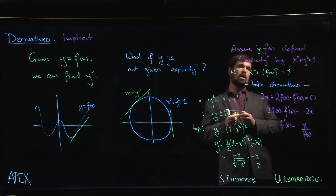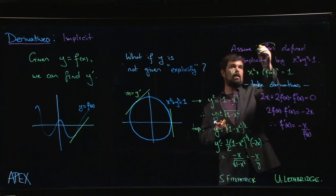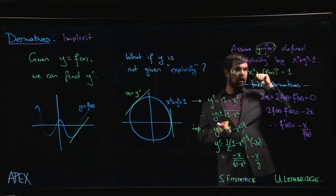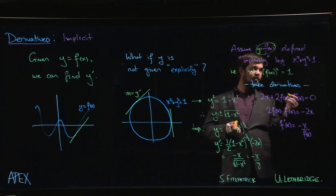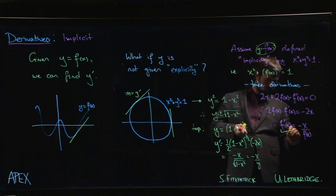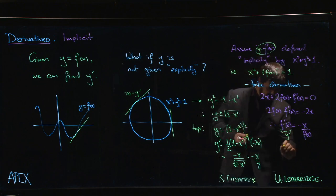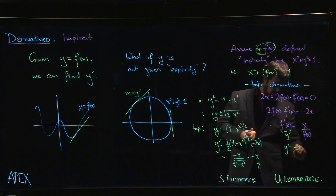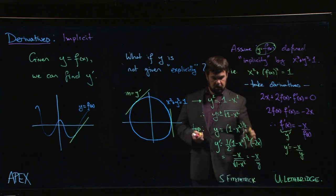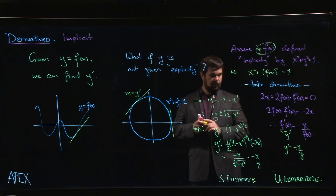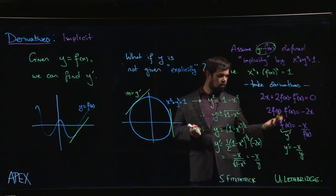But in practice we don't write it this way. What we do is we say, well we're not going to write f of x, we're just going to write y. Y is equal to f of x, and if y is equal to f of x then f prime should just be y prime. So what does this say? It says that y prime is equal to minus x over f of x, which is just y, and we've arrived at the same result as before.